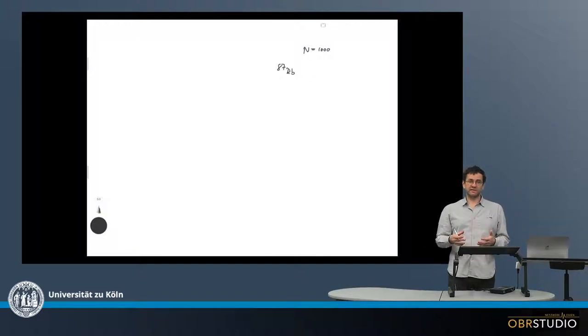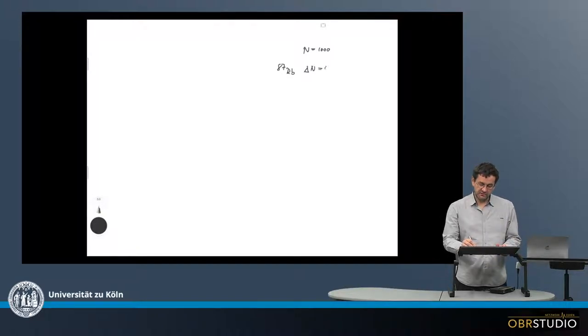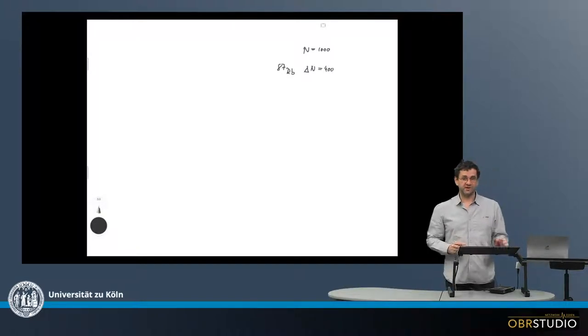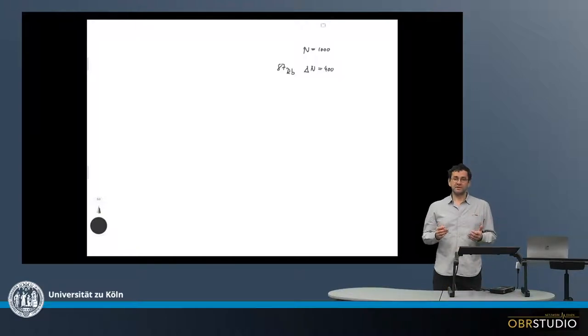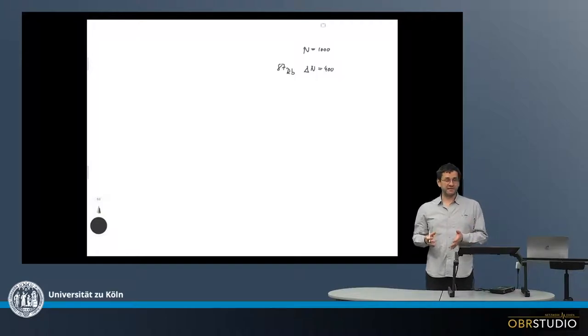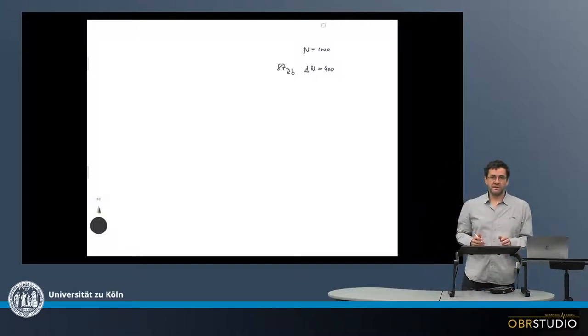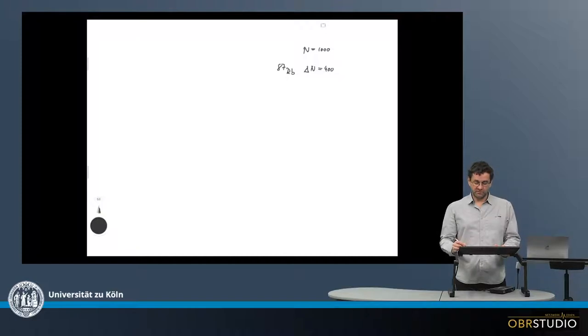Now after a certain time, say 1 second, a certain amount of this isotope decays, say 400. So delta n of 400 rubidium-87 isotopes decay, which means we need to subtract this from the initial amount and then we can calculate that the remaining 687 rubidium isotopes remain.